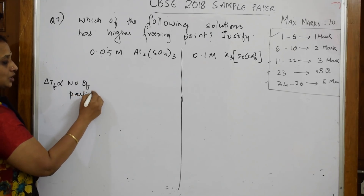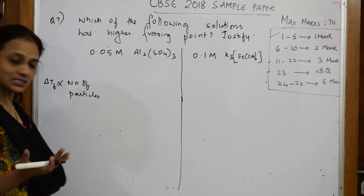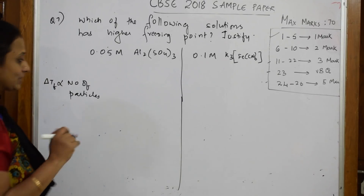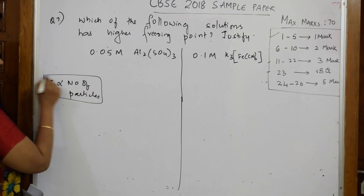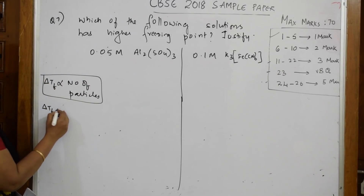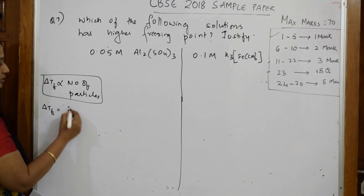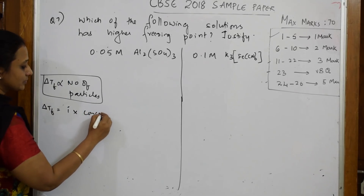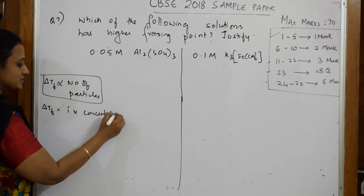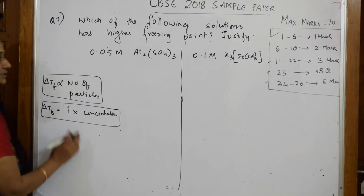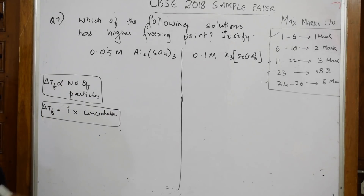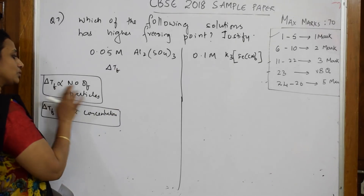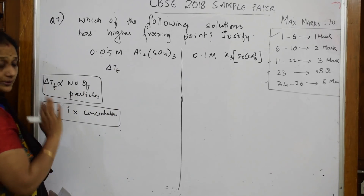More number of particles means more will be the depression in freezing point — that is the concept. The other formula we studied: ΔTf = i × concentration. Now substitute this. For the first solution, more number of particles means more will be the freezing point depression.